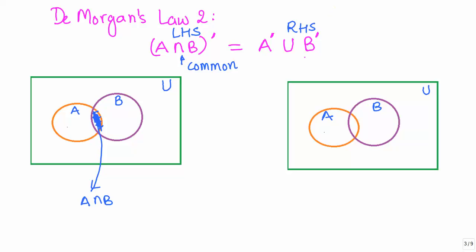Now, what is the complement? Complement simply means everything except A intersection B, which means three parts, essentially. Let me use a different color. This part, this part, and everything outside here. So that is what represents A intersection B complement.